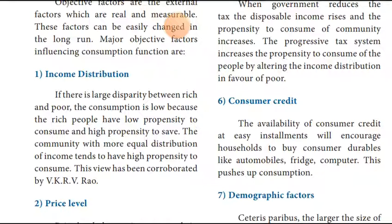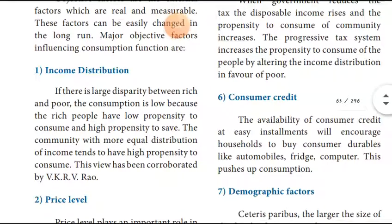Rich people have a high propensity to save and are low-level consumers. Poor people are also low-level consumers. So rich people show high level savings and low level consumption.